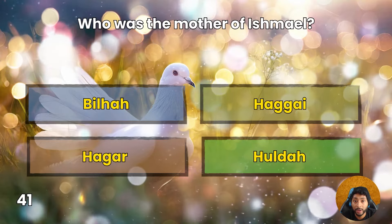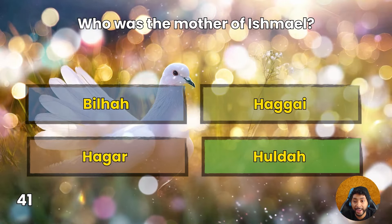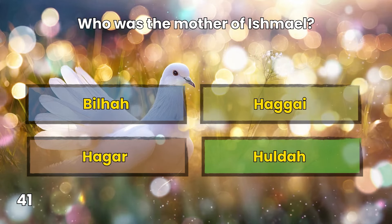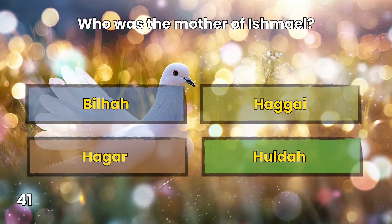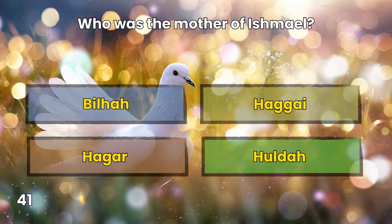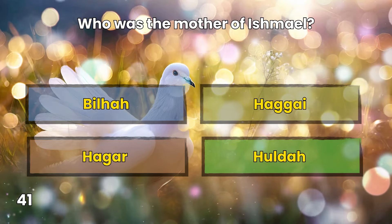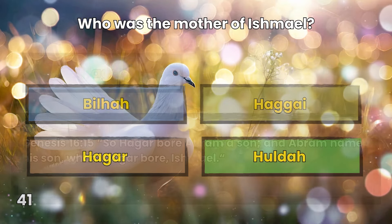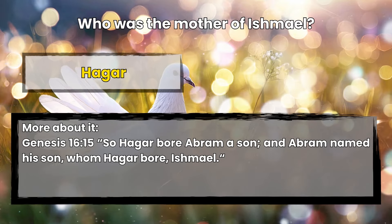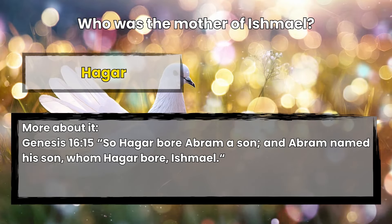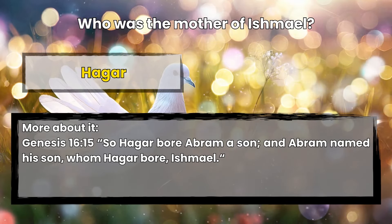Question 41: Who was the mother of Ishmael? Bilhah, Haggai, Hagar, or Huldah? Hagar. Genesis 16:15 — So Hagar bore Abram a son, and Abram named his son, whom Hagar bore, Ishmael.